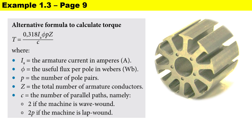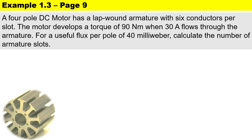For lap wound, the number of parallel paths is the same as the number of poles. In this example, a four-pole DC motor has a lap wound armature with six conductors per slot. The motor develops a torque of 90 newton meters when 30 amperes flows through the armature, for a useful flux per pole of 40 milliweber. Calculate the number of armature slots.